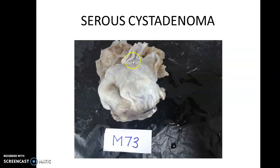You can also have a specimen of ovarian cyst. You have to describe the differences between a serous cystadenoma and a mucinous cystadenoma on gross. Serous cystadenomas tend to be unilocular, whereas mucinous cystadenomas tend to be multilocular. The contents of a serous cystadenoma is watery, whereas a mucinous cystadenoma tends to have mucoid fluid.